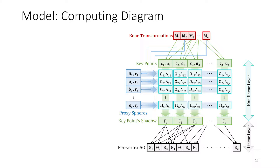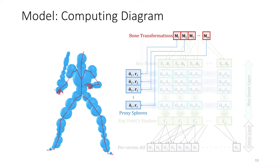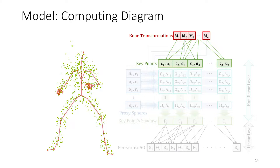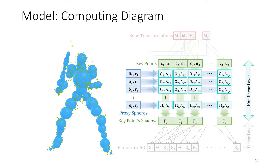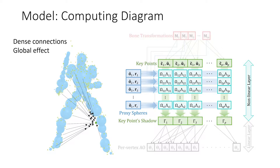Looking at the computing diagram for our model, it contains two layers: on top, a dense nonlinear layer, and at the bottom, a sparse linear layer. The input of our model is bone transformations. They drive the transformations of proxyspheres, resulting in changes to their centers. Note that bone transformations are rigid, so the radii of the spheres do not change. Bone transformations also drive transformations of keypoints, resulting in changes to their positions as well as their normals. At runtime, we have transformed proxyspheres and transformed keypoints. Each keypoint receives contributions from all spheres. These nonlinear, dense connections carry global effects, but are costly.